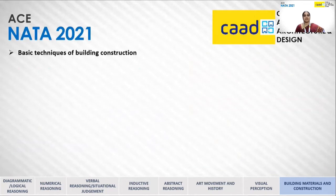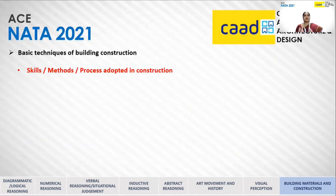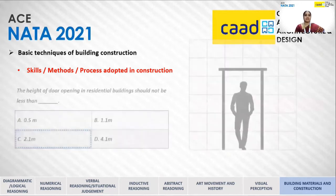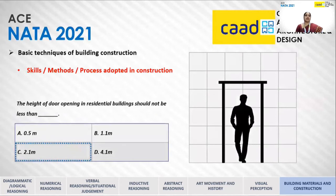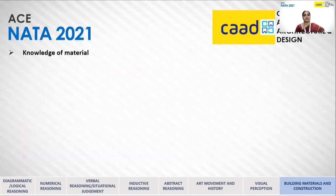Basic Techniques in Building Construction: questions will be asked based on skills, methods, and processes adapted in construction. For example, the height of a door opening in a residential building should not be less than 2.1 meters.